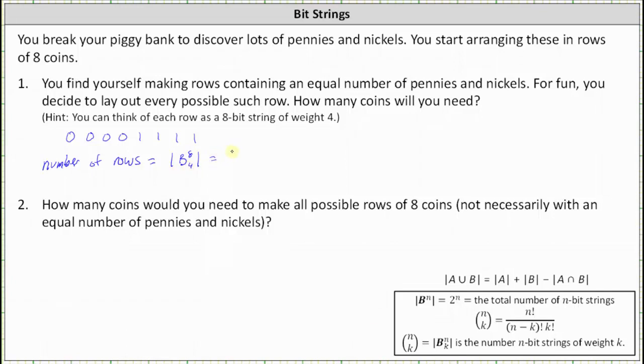This is equal to eight choose four. Let's evaluate this by hand. This is equal to eight factorial divided by the product of eight minus four factorial and four factorial. Let's simplify this.